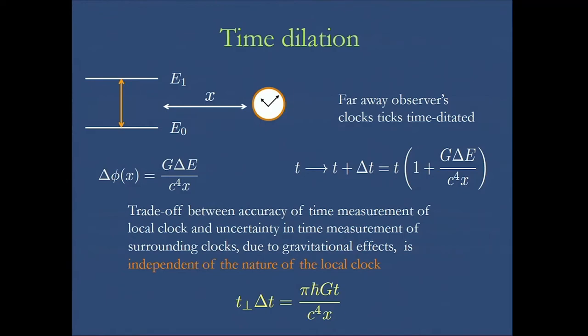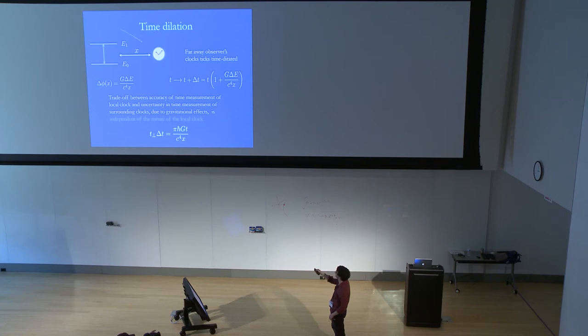But the point is that since this system is a clock, it's neither here nor here, rather in a superposition between the two states. And therefore, this other clock, the clock which is next to it, the distance x separated from it, does not now know how to tick. It has some uncertainty in its time dilation due to the uncertainty of the energy here. So this is the main idea of the work we are presenting now.